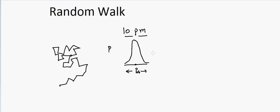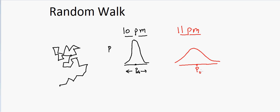The probability is highest at the pub and decreases with distance away from it. Now suppose instead of going at 10 PM, the wife goes at 11 PM. After an extra hour of random walking, the probability of the husband being close to the pub is lower. The distribution is now wider — more spread out — indicating he's more likely to be farther away.